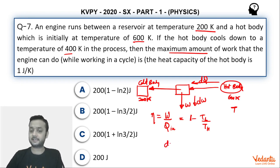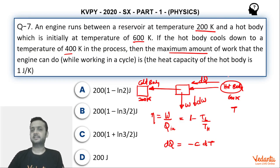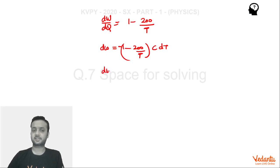DQ is the heat given by this hot body. We can say DQ equals minus c dT using the concept of calorimetry, mass times specific heat capacity. The minus sign is because temperature is decreasing with time. DQ equals minus c dT. Since c is 1, DW equals 200 upon T minus 1 into dT.